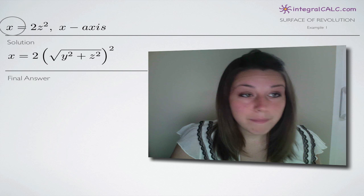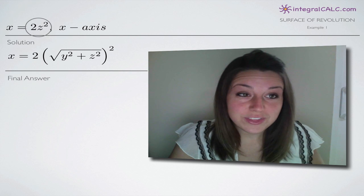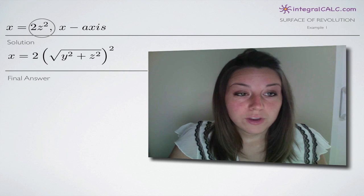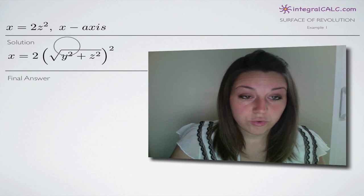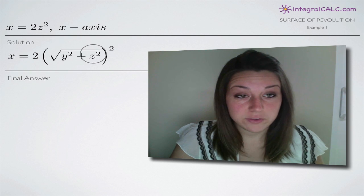Again, we're not messing with x at all, only with the z. So what you're going to do is replace z with this here: square root of y squared plus z squared.